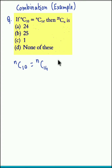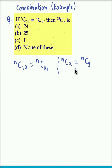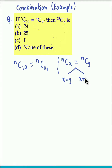We know the property that if NCx is equal to NCy, there could be two possibilities. First is x is equal to y, or the second one is x plus y equal to N.